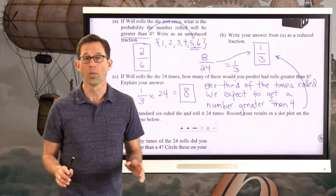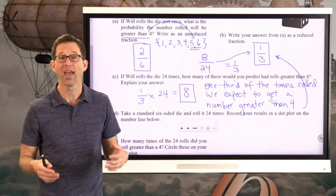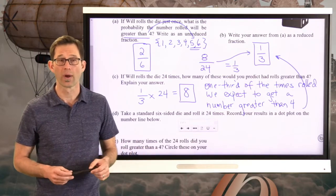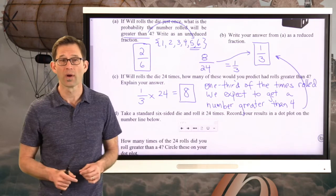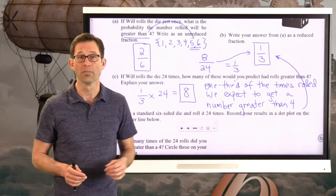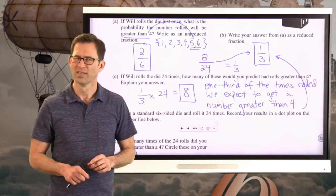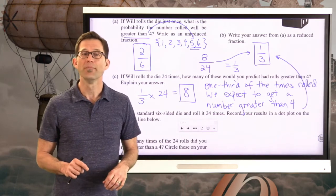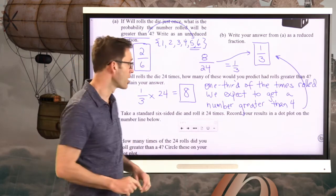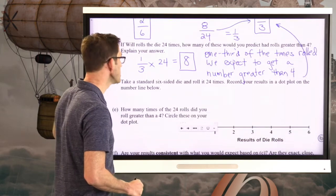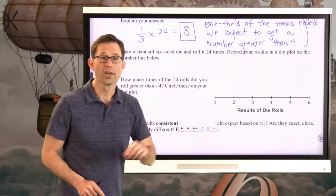But at the end of the day, I really want you to understand that the probability is the fraction of the total times we expect something to happen. And we know how to find the fraction of a total just by multiplying the total by that fraction. Now, you might say we might not actually get 8 numbers that are greater than 4. Maybe we'd get less than that. Maybe all of them would be, maybe all 24. Not likely, but maybe. So I'd like you to experiment a little bit with this.